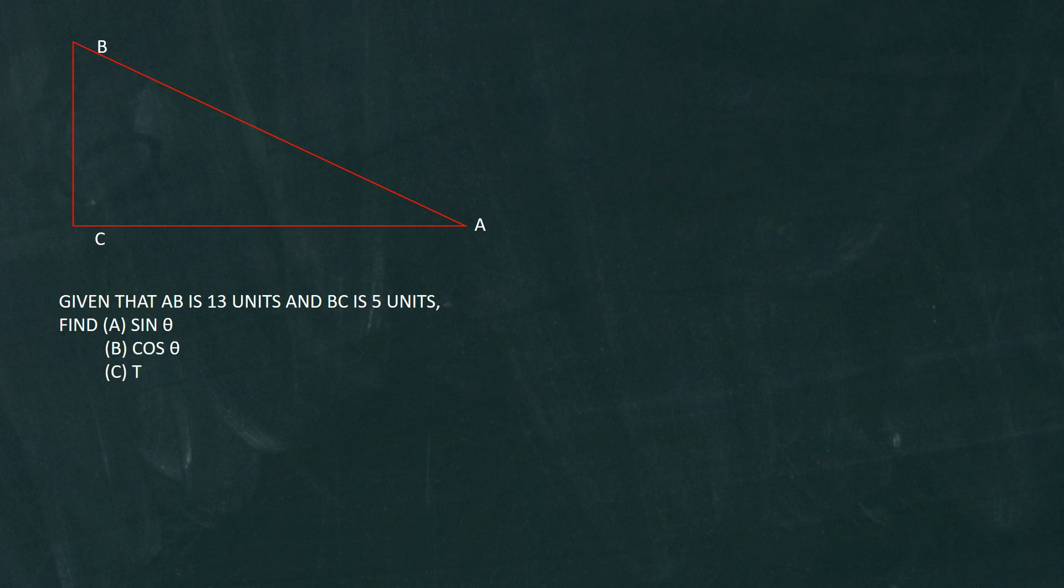We're told that AB, the side AB, is 13 units, BC is 5 units, and we are not given the third side. However, we're asked to find the sine of theta, cos of theta, tan of theta, and cos 2 theta.